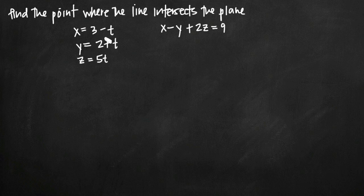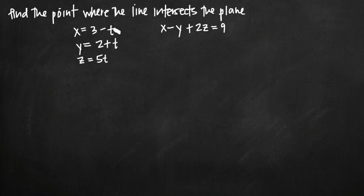We need to figure out where this line and this plane have a point of intersection. The way we're going to do that is by plugging the parametric equations into our equation for the plane. That's going to reduce the equation so that it's only in terms of the parameter value t, and then we should be able to solve for t — that'll be the value of the parameter where the intersection occurs.